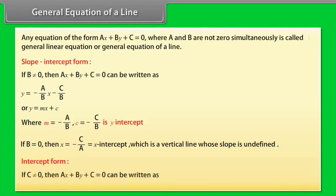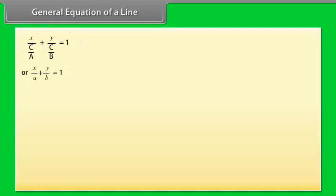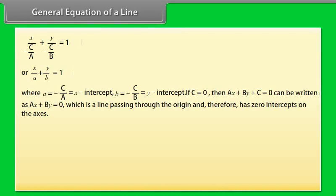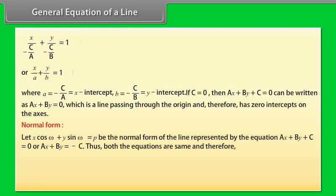Intercept form: If c ≠ 0, then ax + by + c = 0 can be written as x/a + y/b = 1, where a = −c/a is the x-intercept and b = −c/b is the y-intercept. If c = 0, then ax + by = 0 is a line passing through the origin and therefore has zero intercepts on both axes. Normal form: Let x cos ω + y sin ω = p be the normal form of the line represented by ax + by + c = 0.